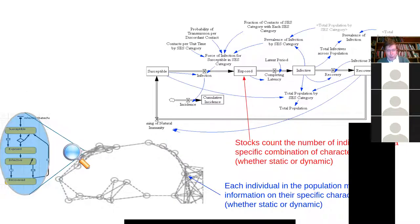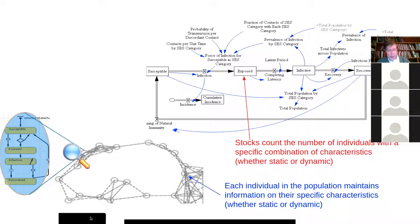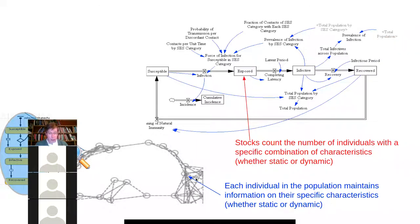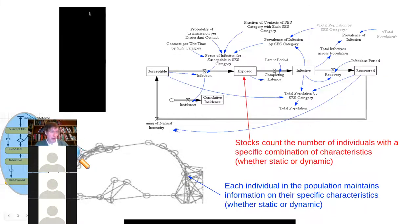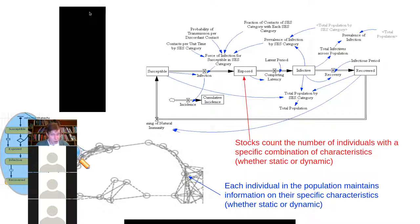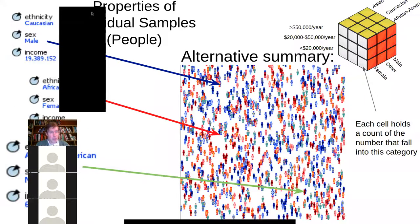Within an agent-based model, we're capturing states in different states of a state chart, but each individual characterizes their own state. We don't have some master count of the number of people at each category maintained for the whole population. Rather, each person maintains where they are in this state chart, and they're also responsible for keeping track of their other characteristics, such as whether they were an immigrant or not. Within a system dynamics model, each stock counts the number of individuals with a specific combination of characteristics, like their state with respect to COVID-19 and whether they're an immigrant. In an agent-based model, each individual maintains information on their specific characteristics, whether static or dynamic.